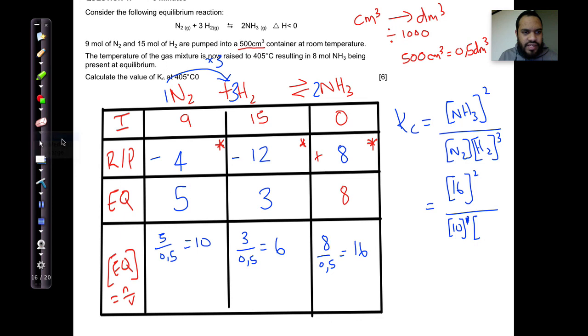Divided by 10 to the power of 1, and that's multiplied by 6 to the power of 3. Now you can just type that in your calculator and see what you get.